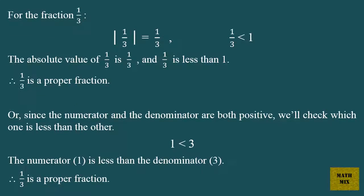The absolute value of 1 over 3 is 1 over 3, and 1 over 3 is less than 1. Therefore, 1 over 3 is a proper fraction. Or, since the numerator and the denominator are both positive, we'll check which one is less than the other. The numerator 1 is less than the denominator 3. Therefore, 1 over 3 is a proper fraction.